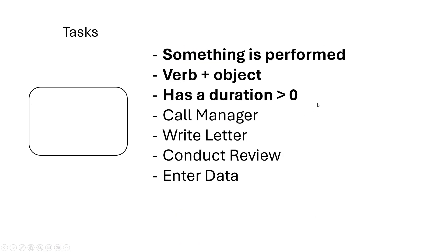Now, tasks. If an event has no duration, a task is something that does have a duration. Tasks, also called activities, are performed during a process and have a duration greater than zero — this could be an hour, a minute, seconds, or even milliseconds. The naming form is verb plus object. For example: call manager, write letter, conduct review, or enter data. These are classical activities and they take time.